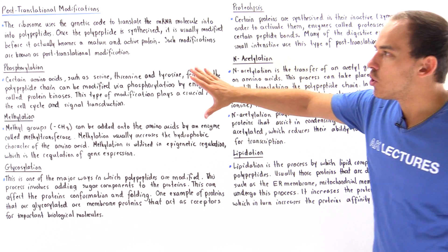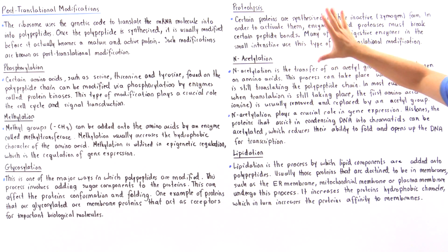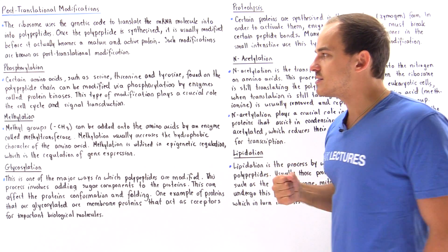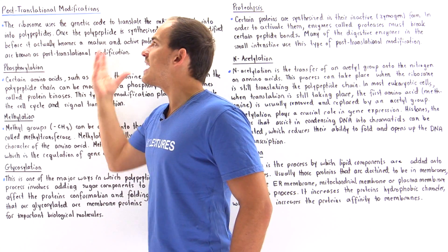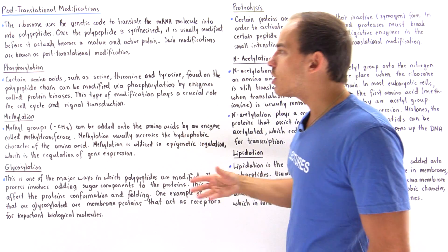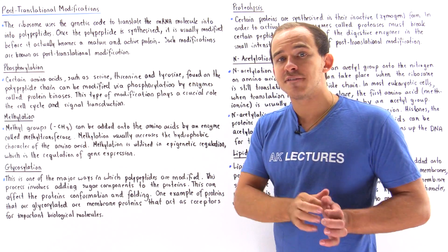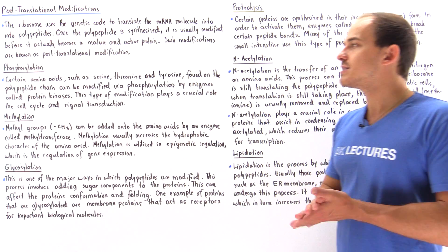We saw that phosphorylation, methylation, glycosylation, proteolysis, acetylation, and lipidation are six different processes known as post-translational modifications. These are the ways by which our polypeptides are modified following the process of translation.